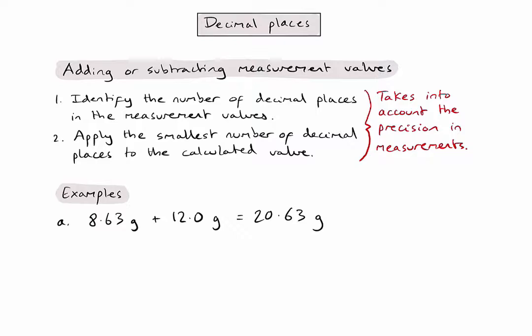The first value has two decimal places and the second value has just one decimal place. I now need to take the smaller of those two numbers, which is one, and apply that decimal place to my answer. So 20.63 to one decimal place is going to be 20.6 grams.